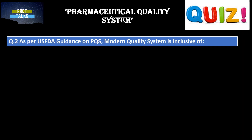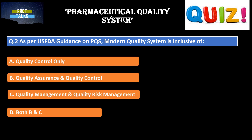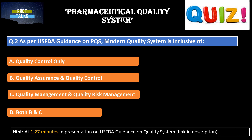Next question: as per USFDA guidance on the pharmaceutical quality system, the modern quality system is inclusive of — options are: the modern quality system includes only the quality control aspect; it includes quality assurance and quality control; it includes quality management and quality risk management; and the fourth option is it includes both B and C, that is quality assurance and quality control, quality management and quality risk management. If you know the answer please provide it, else you can go to the USFDA guidance presentation and find the answer at 1.27 minutes of that presentation.